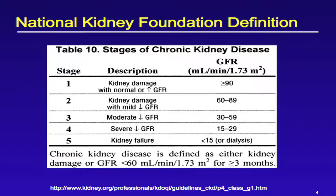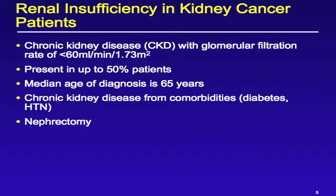Starting off, this is the National Kidney Foundation definition of chronic kidney disease, defined as a GFR of less than 60 mLs per minute per 1.73 meters square. You'll see here on the table the various stages, and I have listed the CTCAE grades that correlate to the various stages — grade two, three, and four. In terms of renal insufficiency in kidney cancer patients, it occurs in up to about 50% of patients. These are patients that are older, with a median age of 65 years, having chronic kidney disease from comorbidities such as diabetes, hypertension, and the majority have undergone nephrectomy.